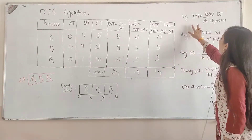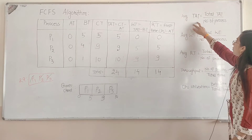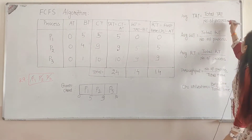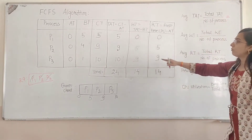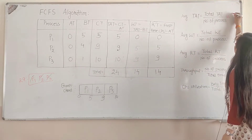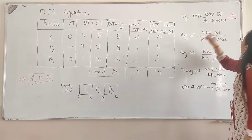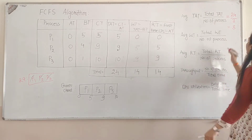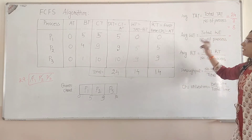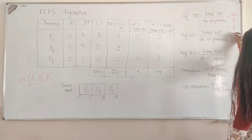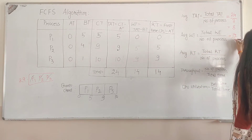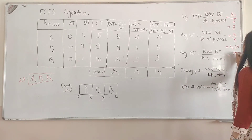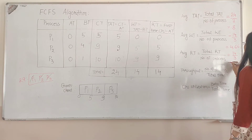Now we calculate the averages. Average turnaround time = total turnaround time divided by number of processes = 24 divided by 3 = 8. Average waiting time = total waiting time divided by number of processes = 14 divided by 3 = 4.66.